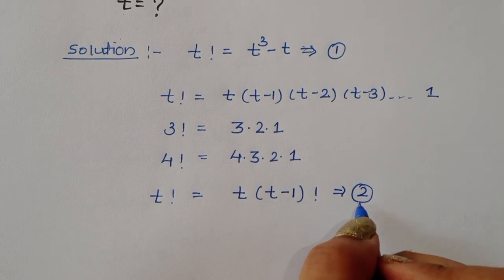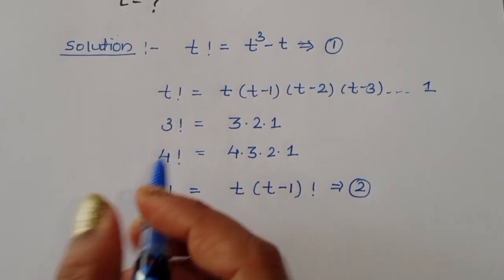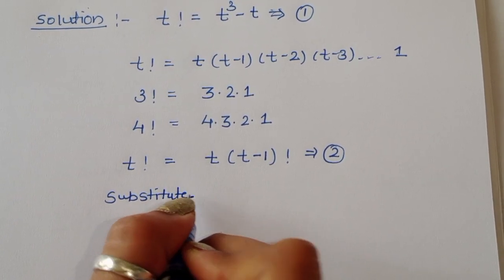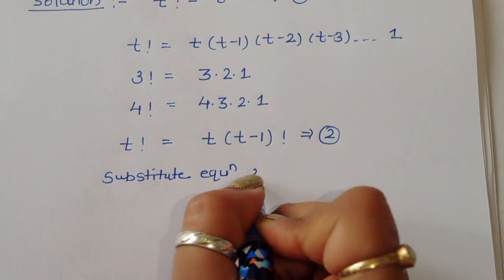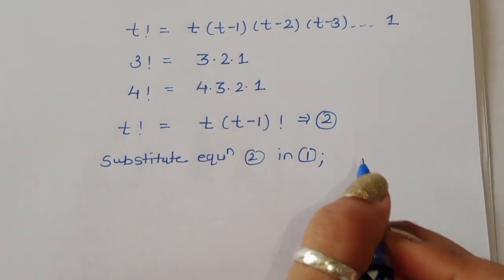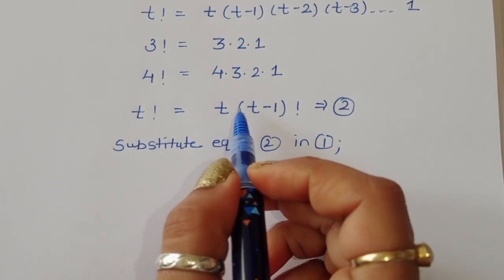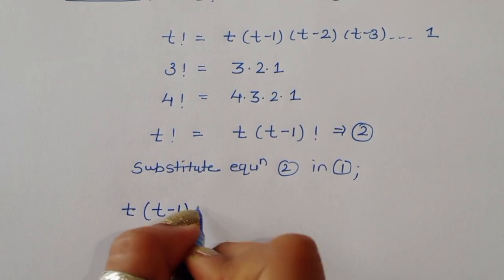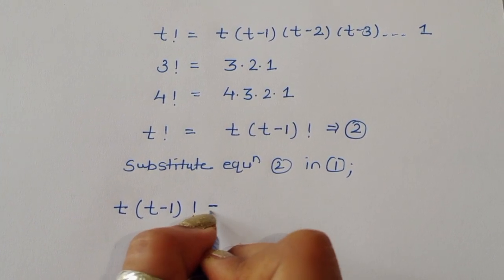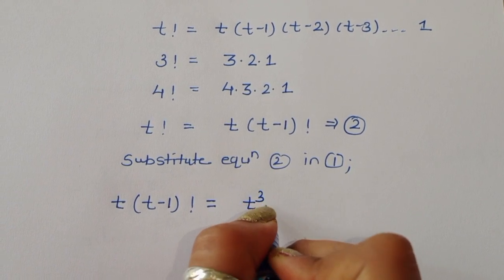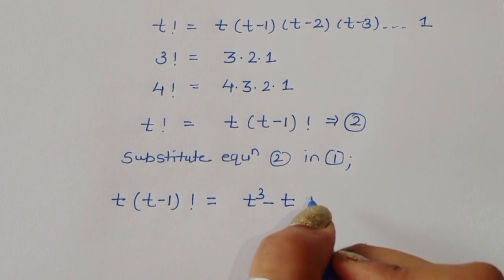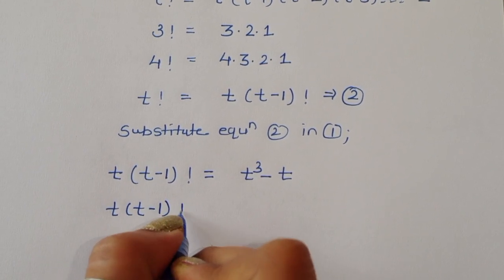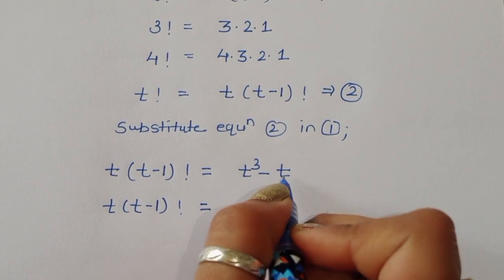We have to substitute equation 2 into equation 1. Substituting, we get: t times (t minus 1) factorial is equal to t cubed minus t.